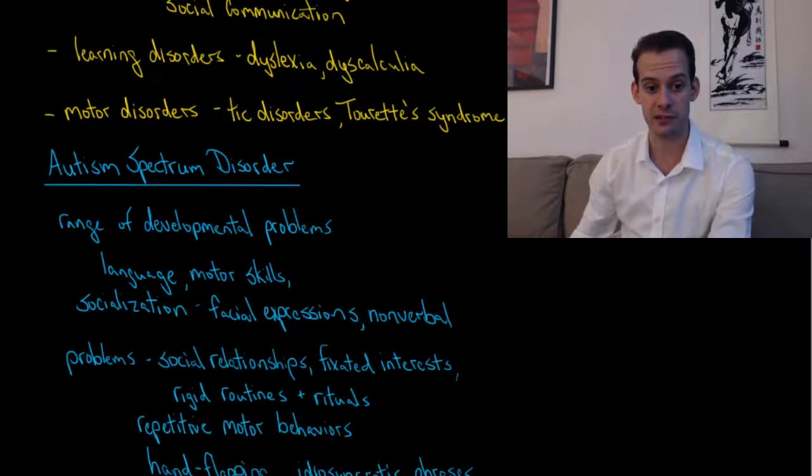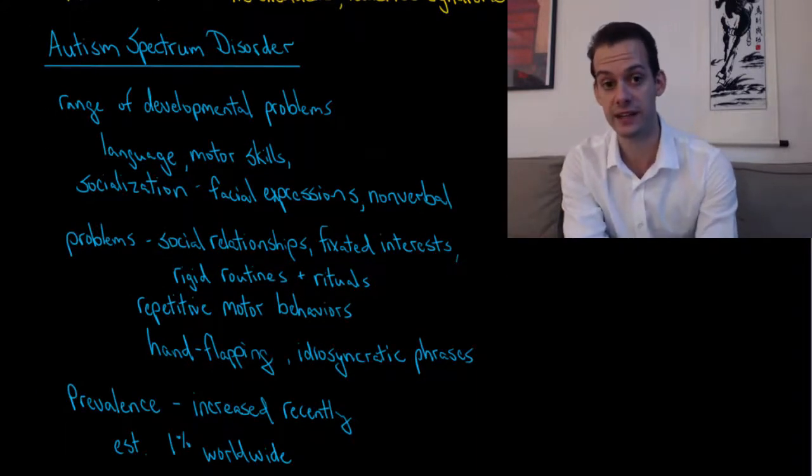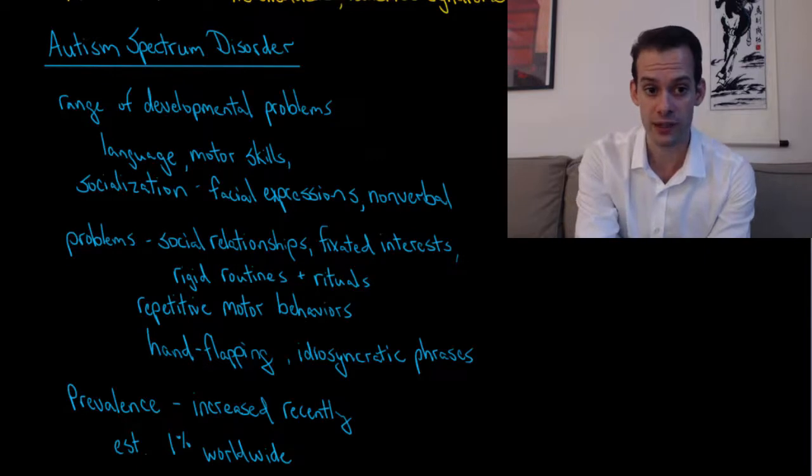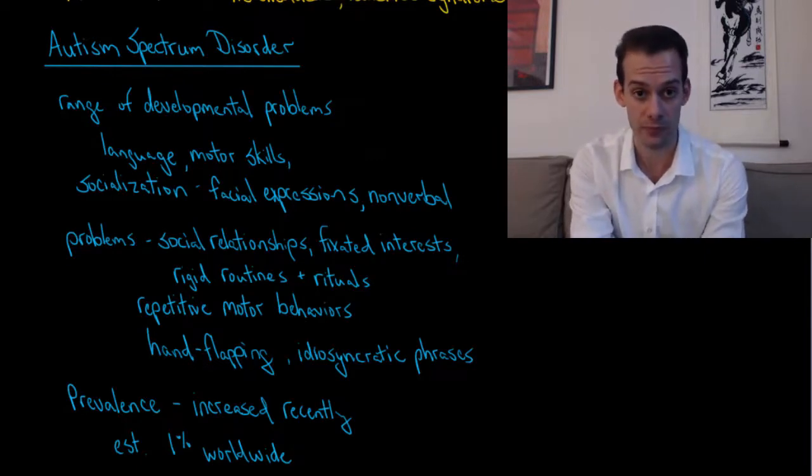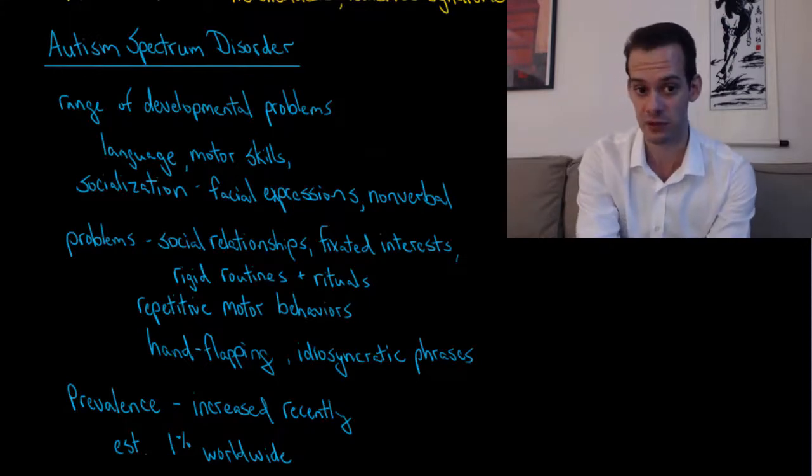We'll start by looking at autism spectrum disorder. What we see in autism spectrum disorder is a range of developmental problems, which relates to a criticism that it's become a catch-all diagnosis because there are a number of unrelated problems that are all considered to be part of autism spectrum disorder.